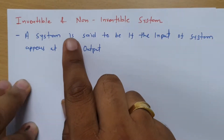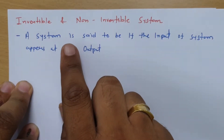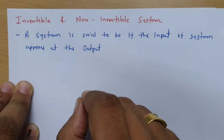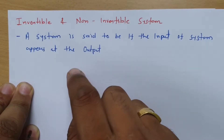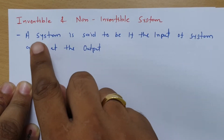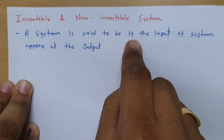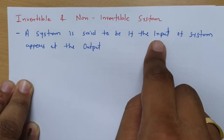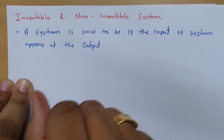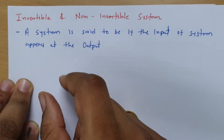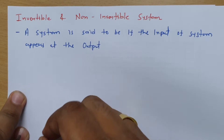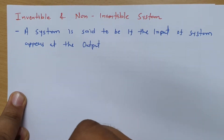Welcome to signal and system lecture series. Here in this session I will be going to explain invertible and non-invertible systems. A system is said to be invertible if the input of the system appears at the output side. Only then can we invert it. If the input is not appearing at the output side, then it is impossible to invert that system.